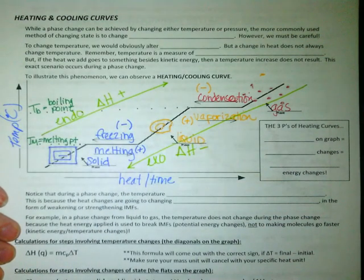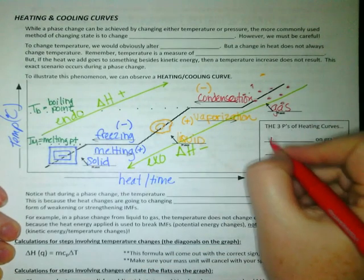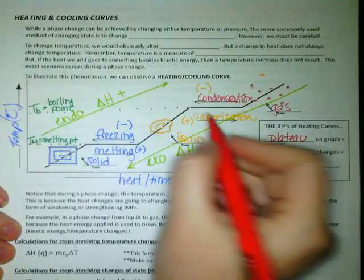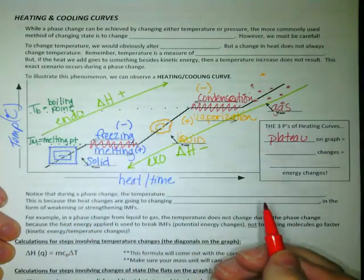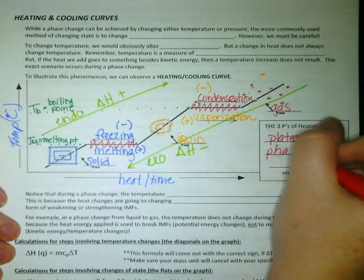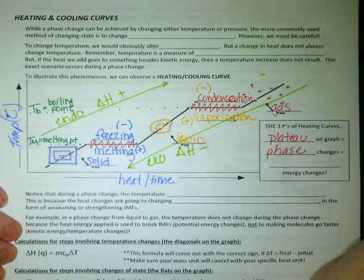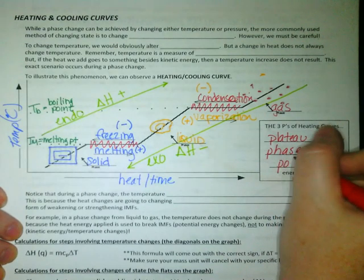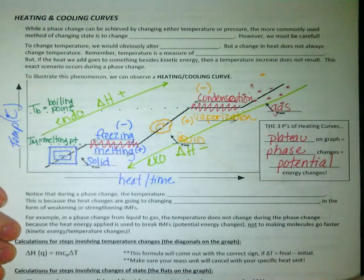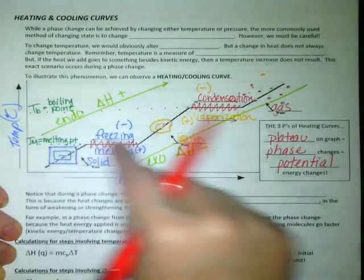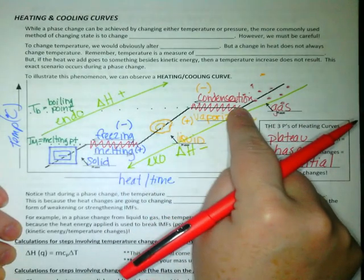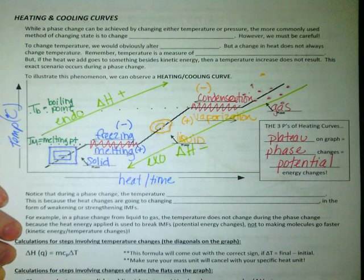If you have questions about how these work, just as a general reminder, the plateaus, that means the flat part, those plateaus are where we're having a phase change. I'm going from solid to liquid or liquid to gas. This means that potential energy changes, but that potential energy is being used to wiggle those IMFs. Here we're bending them, and now we're loosening them, and here we're breaking them. That takes a lot of energy.